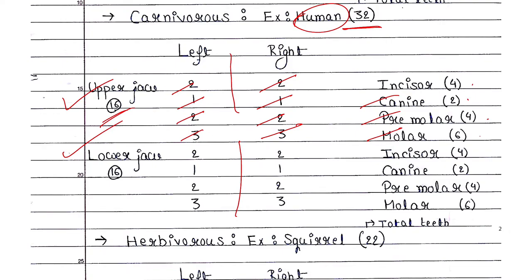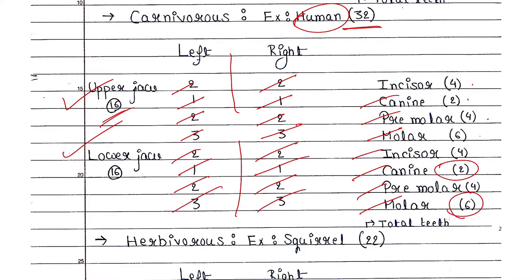In the lower jaw, the arrangement is the same in the case of humans — though in different animals the arrangement can differ between upper and lower jaw. So again in the lower jaw: four incisors, two canines, four premolars and six molars, giving a total of 16 teeth. So 16 in the upper jaw and 16 in the lower jaw gives a total of 32 teeth.